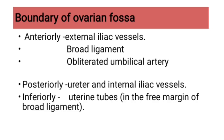To summarize: anteriorly — external iliac vessels, broad ligament, and obliterated umbilical artery; posteriorly — ureter and internal iliac vessels; inferiorly — uterine tubes in the free margin of the broad ligament.